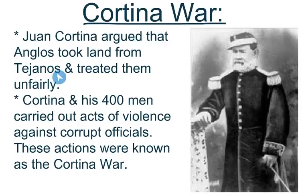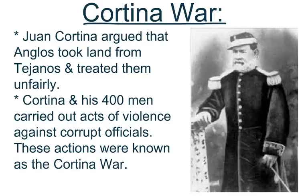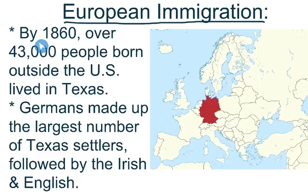Around the time of this population growth, a man named Juan Cortina argued that the Anglos took land from the Tejanos and treated them unfairly. Cortina gathered 400 men and carried out acts of violence against corrupt officials and Anglo-Americans taking these lands. These actions were known as the Cortina War, which increased tensions between the Anglos and the Tejanos and Mexicans living in Texas.